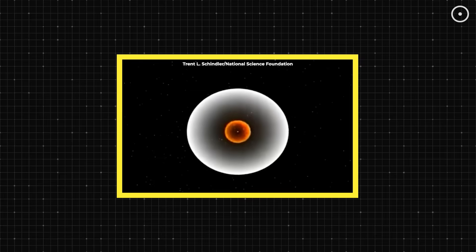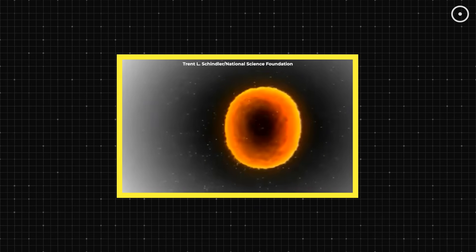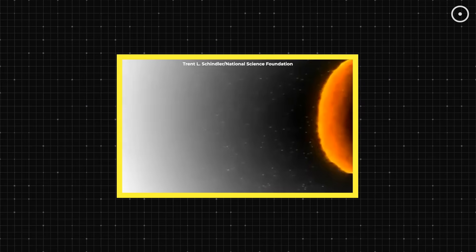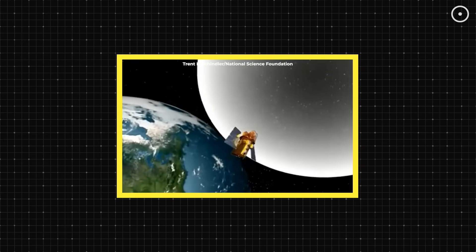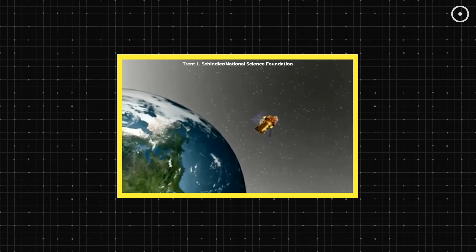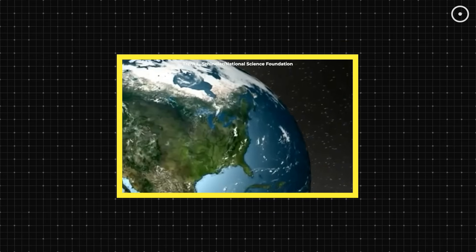The gamma ray burst was so intense that it ionized Earth's upper atmosphere, temporarily disrupted radio communications, and actually affected the night side of our planet during the day.